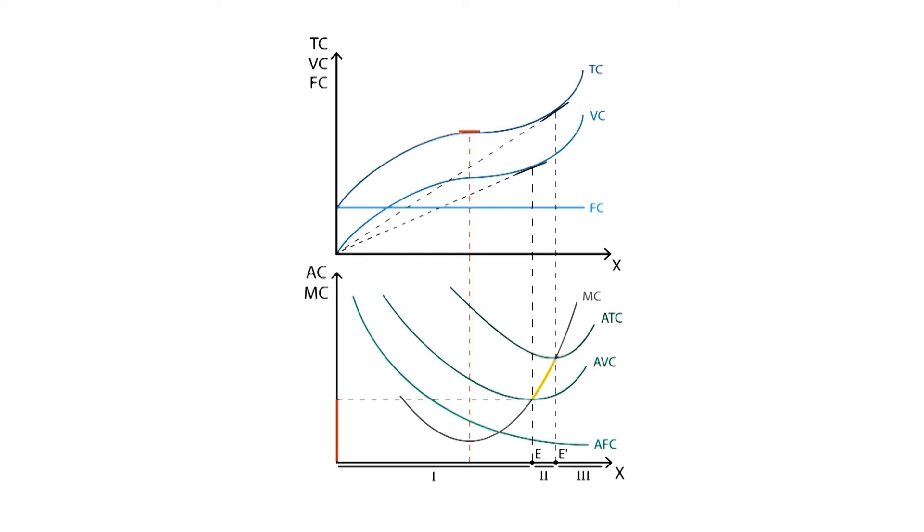Lastly, in phase 3, the firm is now able to cover both its fixed and variable cost. The last part of the marginal cost curve, highlighted in green, corresponds to a production level that guarantees some profit, as long as the market structure allows it.